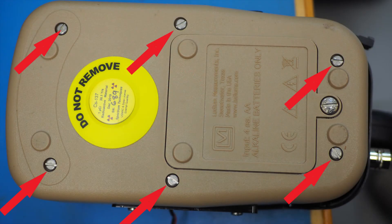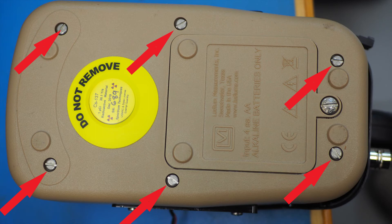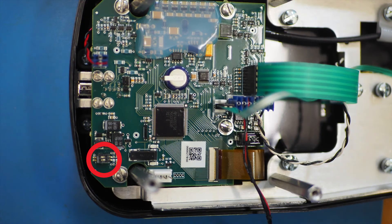First, you have to remove the six screws that hold the two halves together. Then you have to move a small dip switch on the circuit board.